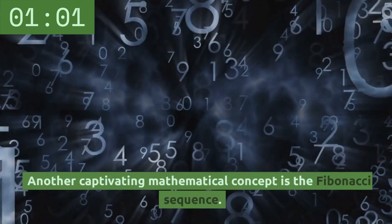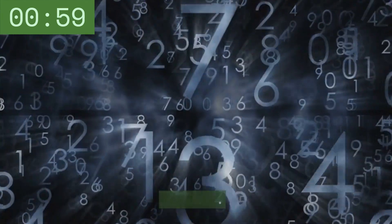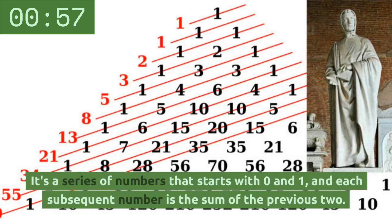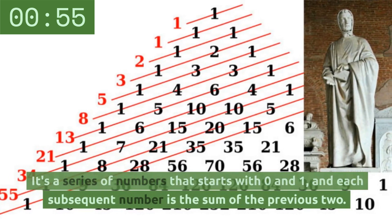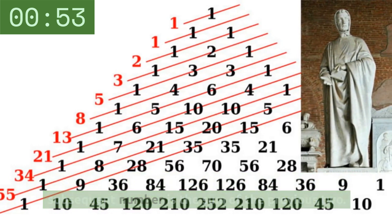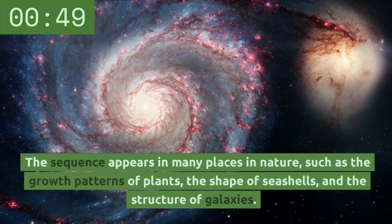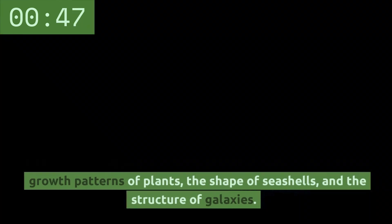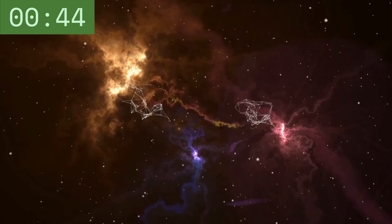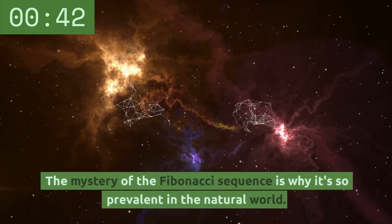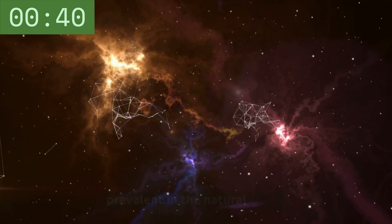Another captivating mathematical concept is the Fibonacci sequence. It's a series of numbers that starts with zero and one, and each subsequent number is the sum of the previous two. The sequence appears in many places in nature, such as the growth patterns of plants, the shape of seashells, and the structure of galaxies. The mystery of the Fibonacci sequence is why it's so prevalent in the natural world.